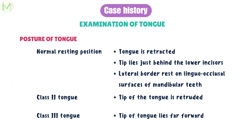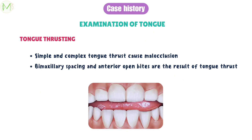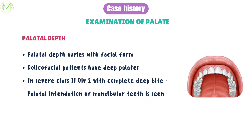The other factors related to tongue which influence normal occlusion are posture of tongue and tongue thrusting. The normal resting position of the tongue is retracted, where the tip of the tongue lies just behind the lower incisors and the lateral border of the tongue rests on the linguo-occlusal surface of the mandibular teeth. In Class 2, the tip of the tongue is retruded, and in Class 3, the tip lies far forward. Both simple and complex tongue thrust can cause malocclusion because of altered posture. Bimaxillary spacing and anterior open bites are the result of tongue thrust.